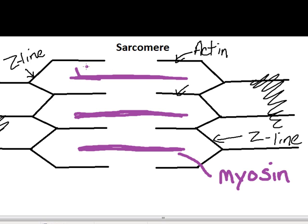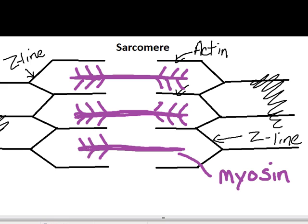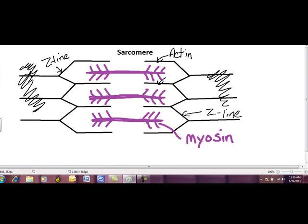Myosin also has these little feathery structures that stick out, kind of like the ends of arrows. Those structures are called the myosin heads. Those myosin heads will eventually interact with actin — they're actually going to grab the actin and pull them closer together. That interaction will be covered in the next video; this one just covers the structure of the sarcomere.